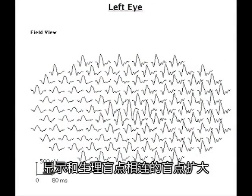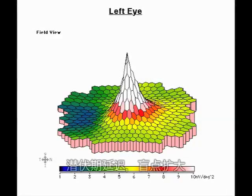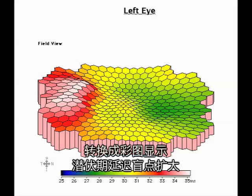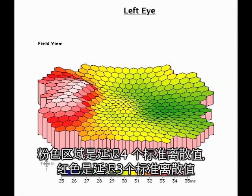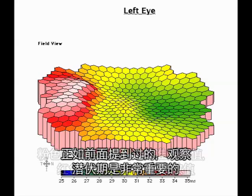This figure shows the multifocal electroretinograms of a patient with big blind spot syndrome. You can see the depressed area around the normal blind spot greatly enlarged. This shows the color transformation of the amplitude in the area of the big blind spot syndrome. This shows the implicit times of a big blind spot syndrome patient transformed into a color scale. The white areas show slowing of five standard deviations, the pink areas slowing of four standard deviations in implicit time, and the red areas three standard deviations in implicit times.